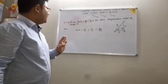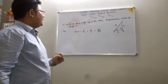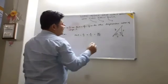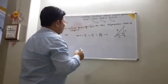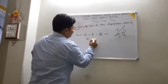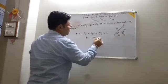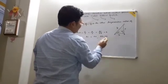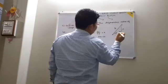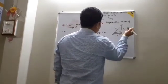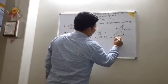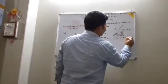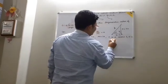We need to find the other trigonometric ratios: cot theta, sin theta, cos theta, cosec theta, and sec theta. We will take a constant K, so BC equals 4K and AB equals 3K. The base is 3K and the perpendicular is 4K, where K is a positive constant.